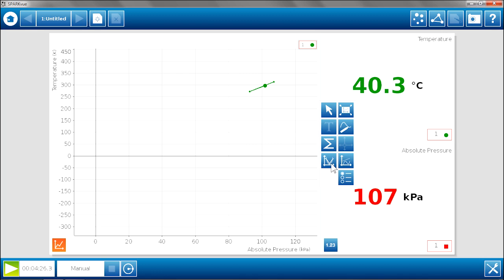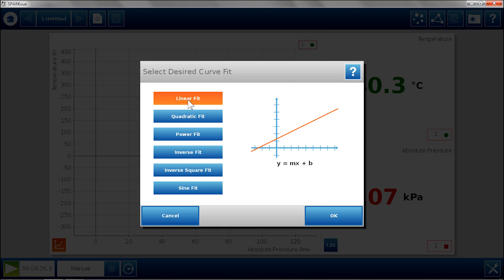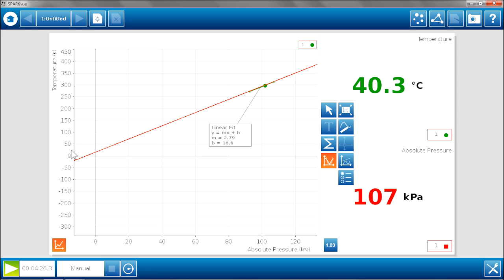And we can put that fit on there again. And now we are not quite at the origin, but we are close to the origin, showing that the temperature scale in Kelvin, zero on there is the absolute zero temperature that we can have.